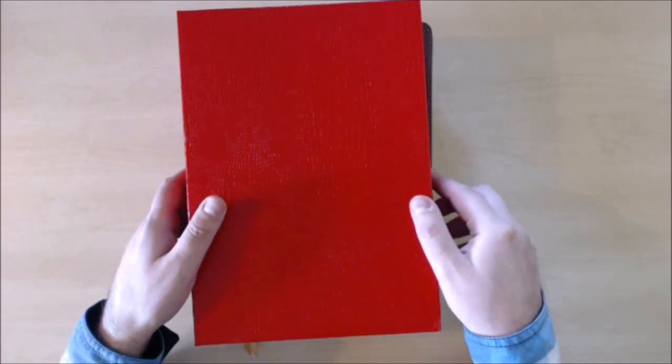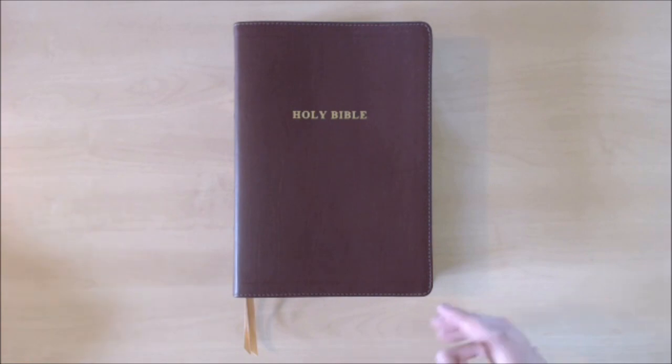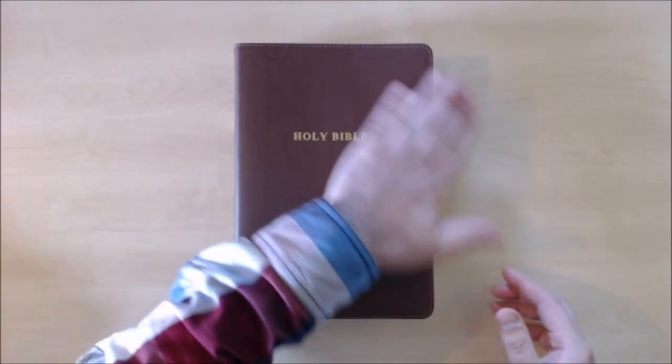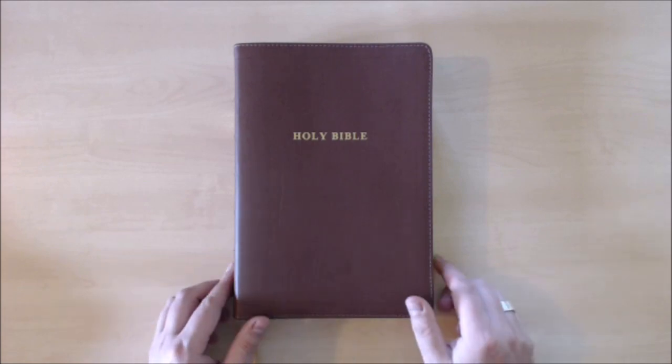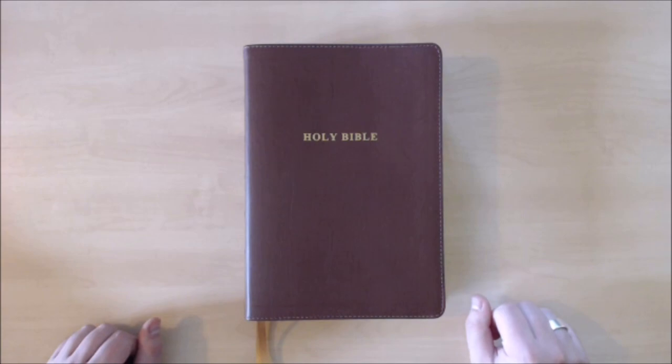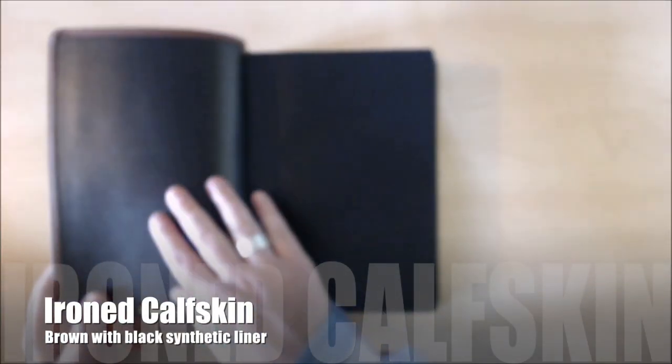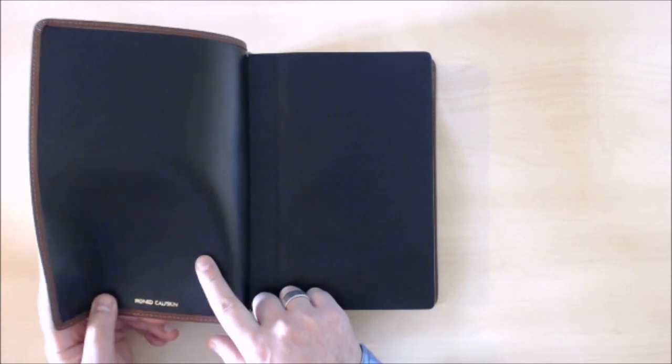And here is this, this is the new Notetakers Bible in brown calfskin, ironed calfskin. Open it up, ironed calfskin. It comes with a lovely smooth inner liner, very flexible.